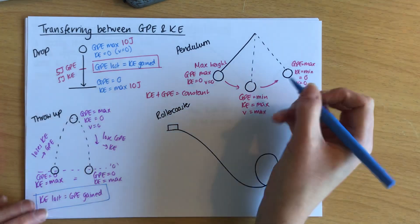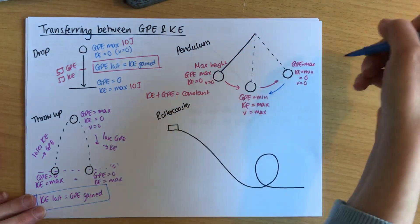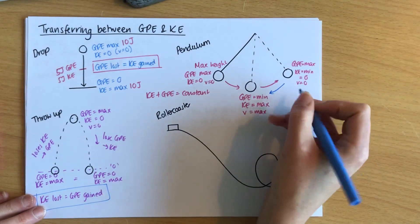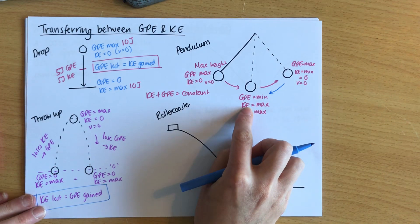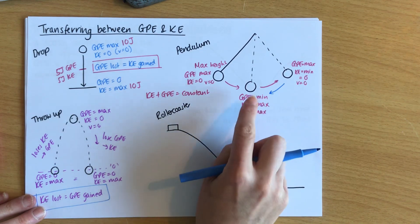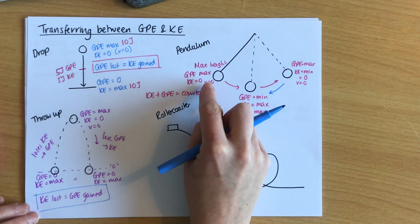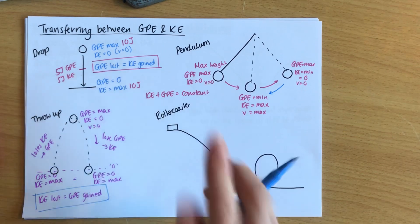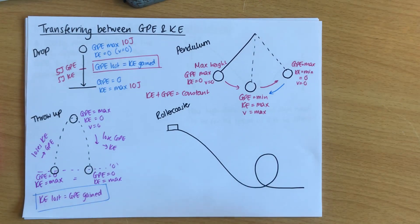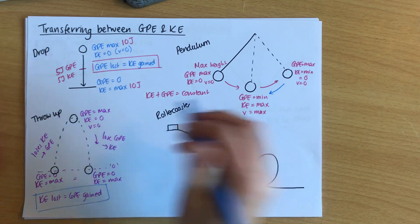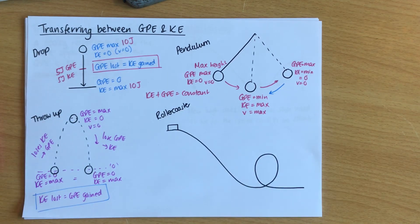Then the whole thing happens again in reverse — back down to the centre with maximum kinetic energy and minimum or zero GPE, and it slows down until it reaches the same height as before. In a perfect world, this pendulum would swing forever and keep to the same height every time. That doesn't really happen — we'll come on to why later.